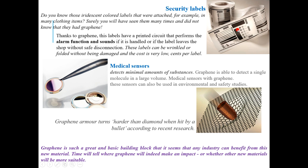Graphene is used in security labels, such as those seen in malls and on garments. When theft occurs, alarm functions are triggered. People in high-security environments are given strips or bands with alarm functions made from graphene. These labels can be wrinkled or folded without being damaged, and their cost is very low. Medical sensors are also made from graphene because they can detect a minimum amount of substance — even a single molecule in a large volume.